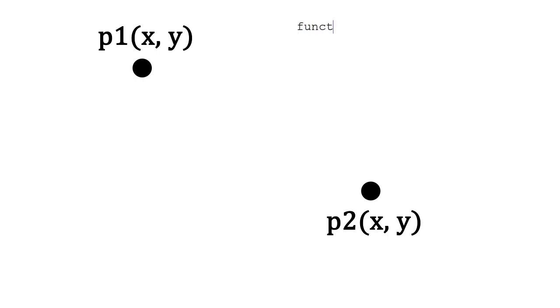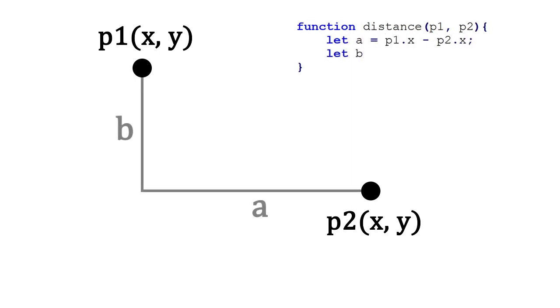So, let's write a function called distance, that has two points as parameters. I first need to find a and b, by calculating the difference on the x and y axes. Then, I can use the Pythagorean theorem to get c squared, and then I take the square root of that, to get the distance, c.